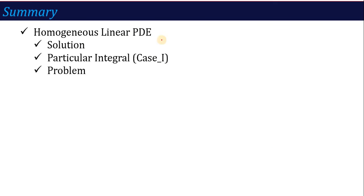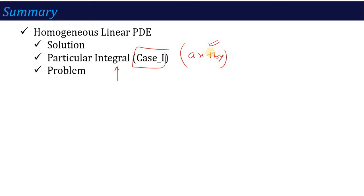After this lecture, you should be able to solve any type of question where the right-hand side is in the AX plus BY form — including cases involving trigonometric products like sin(a)cos(b), or when the denominator becomes 0 requiring differentiation. This concludes Case 1 of particular integral calculation. In the next lecture we will discuss the case where the right-hand side is in another form. Thank you.